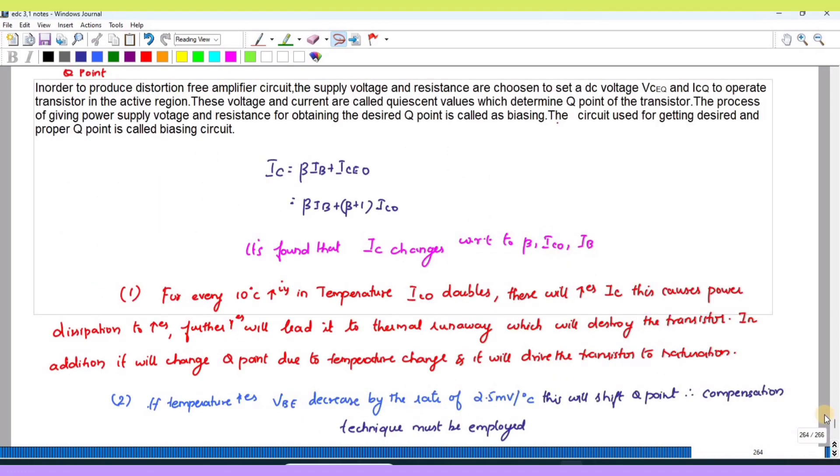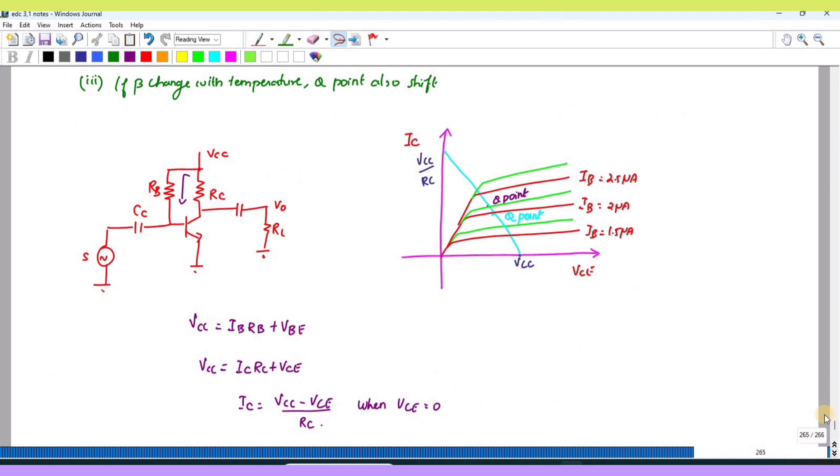Next, beta also changes with respect to temperature. So you know that for output characteristics, this is the output characteristics of CE amplifier, CE configuration.